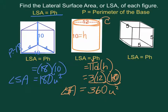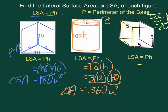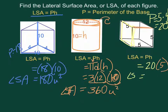On our cube, the perimeter of our base — pick a base, this one here — is 5 plus 5 plus 5 plus 5, so our perimeter is 5 times 4, which equals 20. And our height, the distance between our bases, is also 5. So our lateral surface area of this cube is 100 units squared.